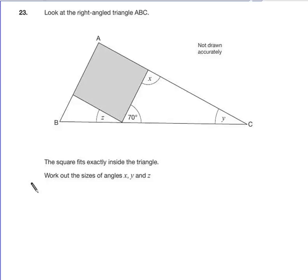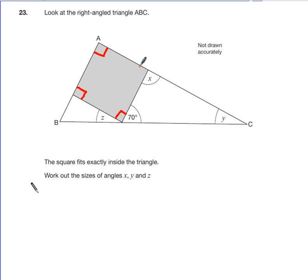Question 23. Look at the right-angled triangle A, B, C. As soon as it says it's right-angled, I know that I can just look and see that one there — that's a right-angle. A square fits exactly inside the triangle. So, other things that we know: that's got to be a right-angle, that's a right-angle, and that's a right-angle. Because it's a square, and they are always right-angles.